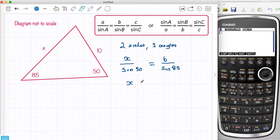So to work that one out, I rearrange it. I make it 10 times sine 50 divided by sine 85, and that will get me my correct answer straight away.